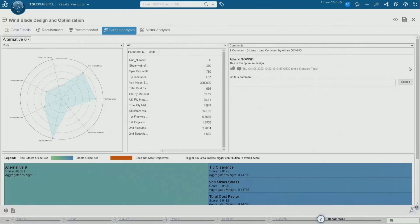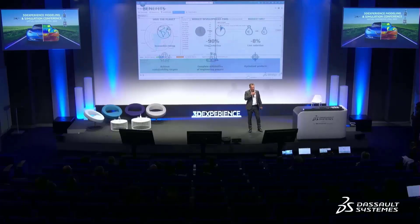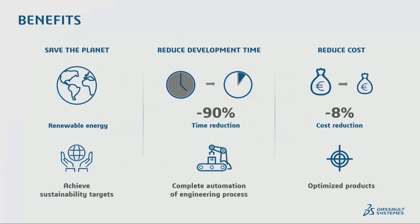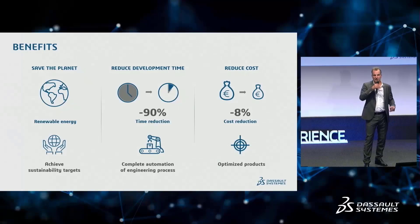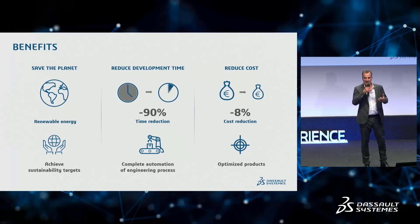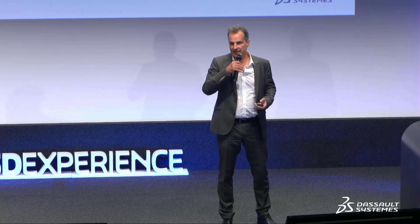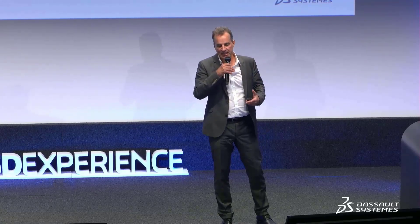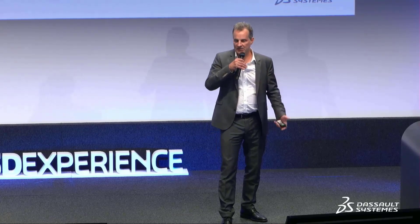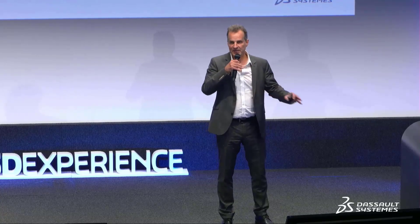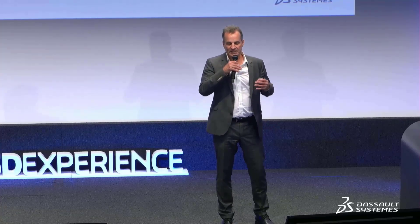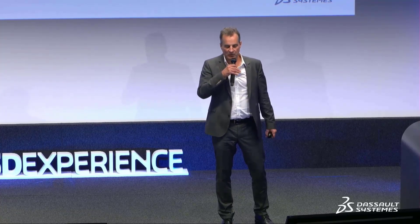So what can we achieve with Modesin in the wind energy sector? Most importantly, we can help save the planet by accelerating the energy transition to renewable energies. At customers already using CATIA Composites and our structural app for rotor blade design, we saw a 90% reduction in design time over the method they were using before. We've also seen a huge reduction in costs — one customer, by using higher fidelity models enabling a higher level of optimization, saw a cost reduction of 8% of capex costs for a single turbine. These are just some of the benefits already seen using Modesin within the wind turbine sector.